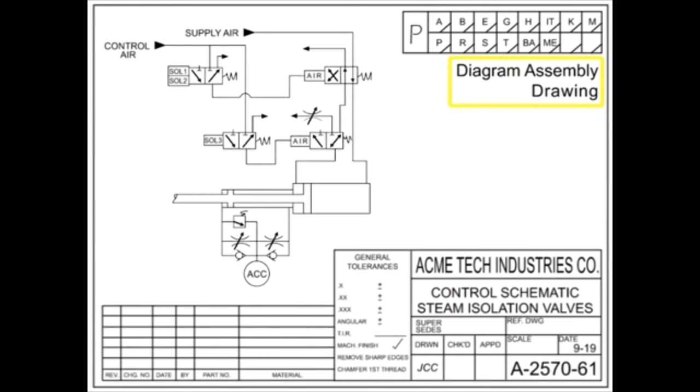A diagram assembly drawing shows installation of equipment using symbols and is often made in pictorial form. Diagram assembly drawings are typically used to depict wiring, piping,